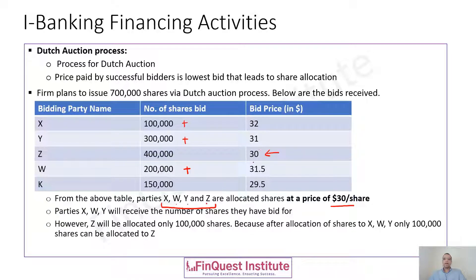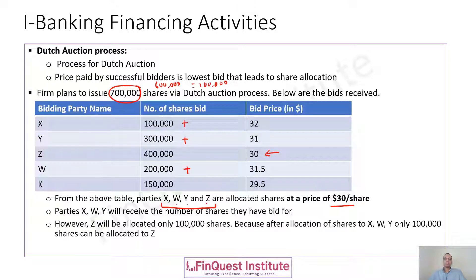Party Z bid at $30. Although Z bid for 400,000 shares, only 100,000 remain available because the total requirement was 700,000 and 600,000 have already been earmarked for parties X, W, and Y. So party Z will be allocated 100,000 shares. Each of the parties will be offered shares at a price of $30, since this is the lowest bid at which the complete allocation of shares occurs.